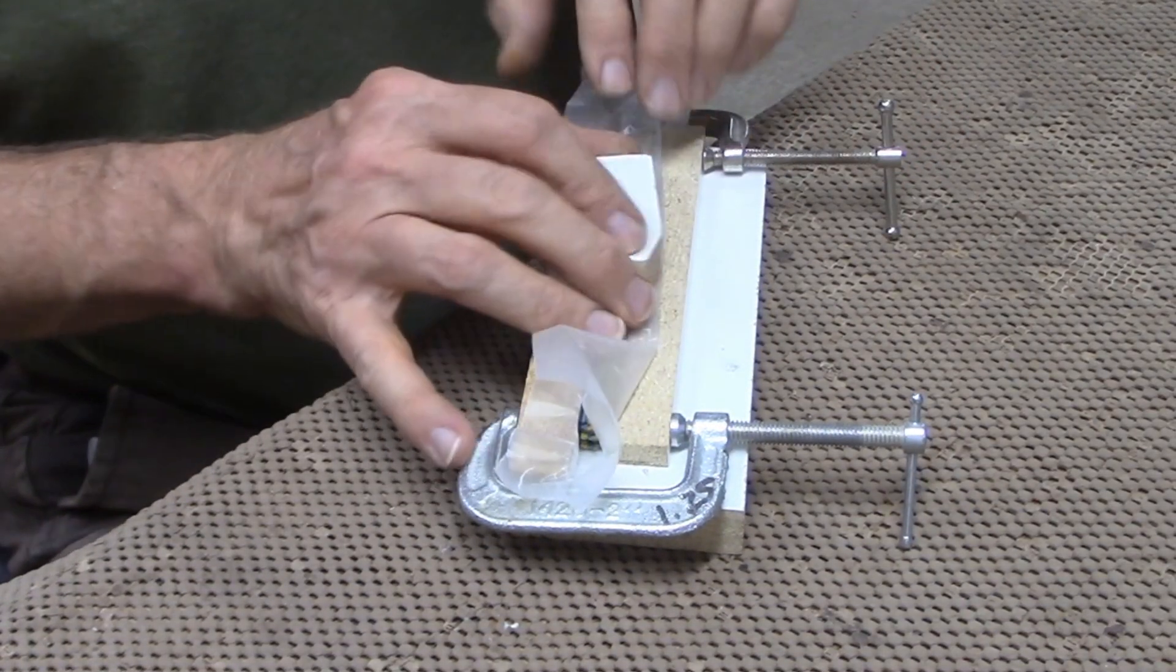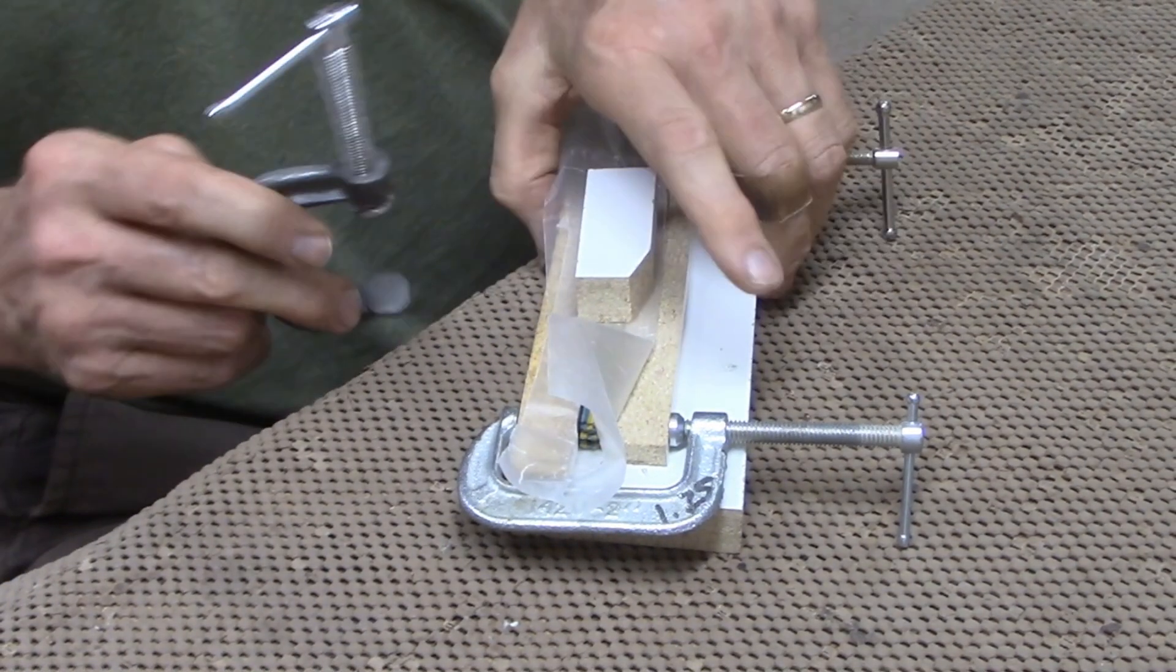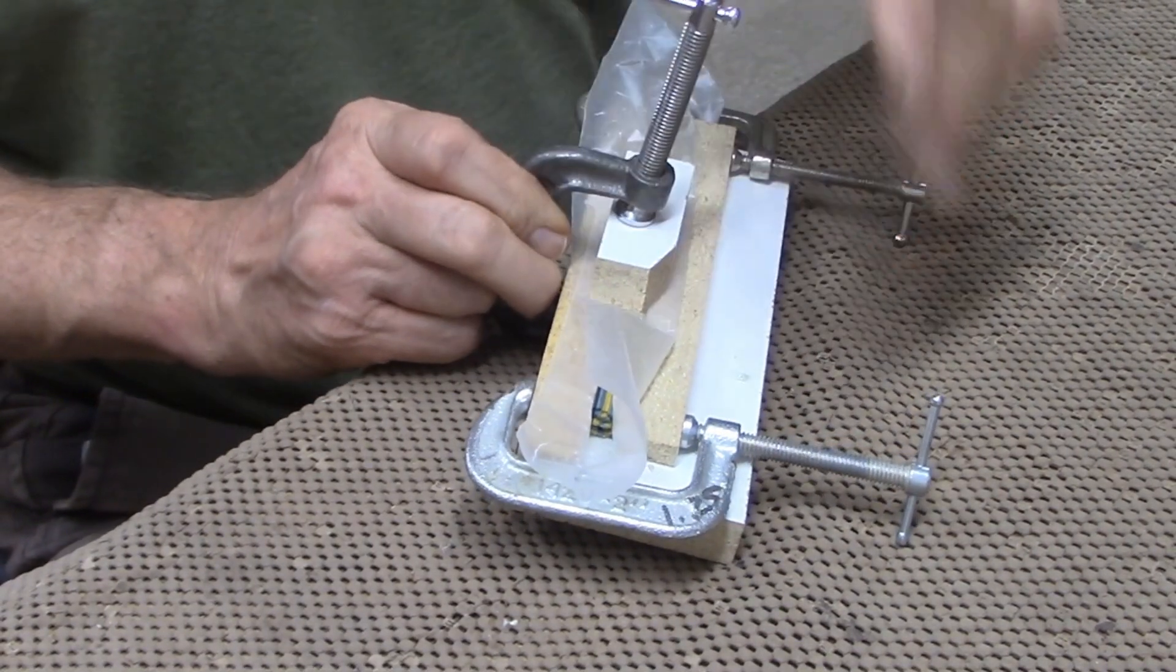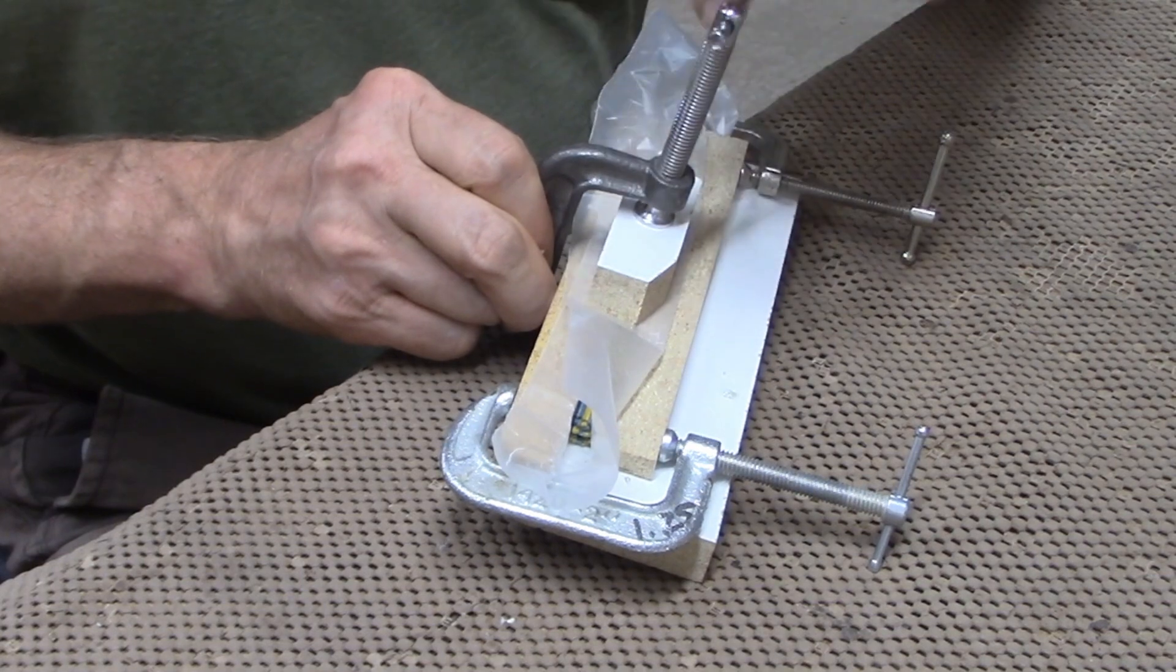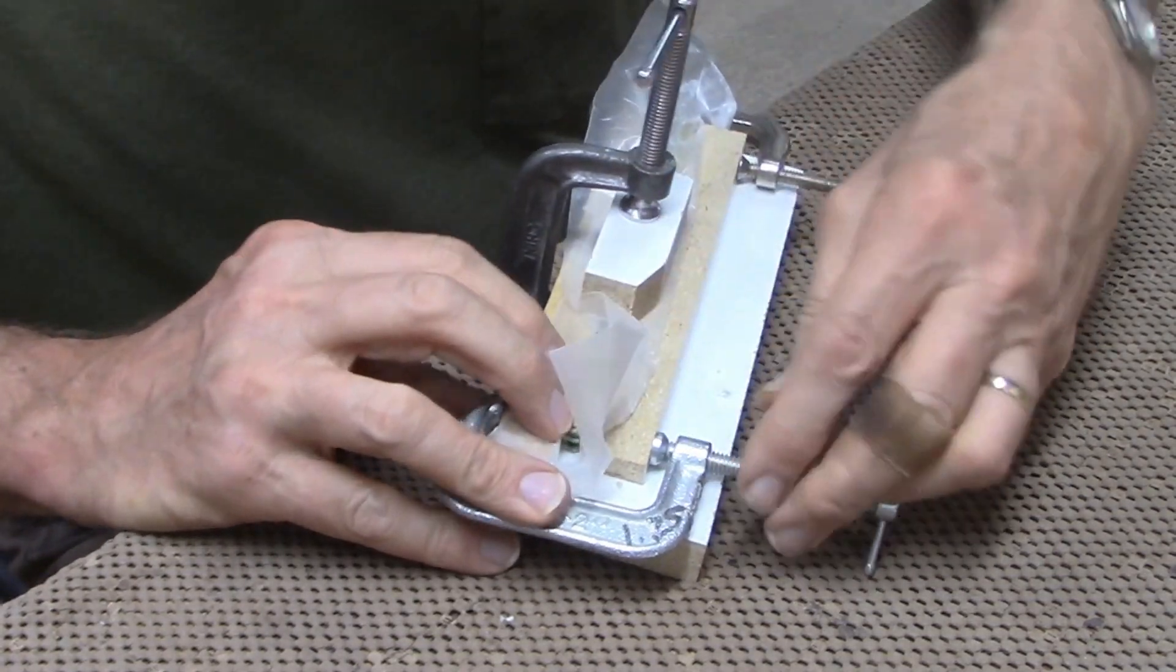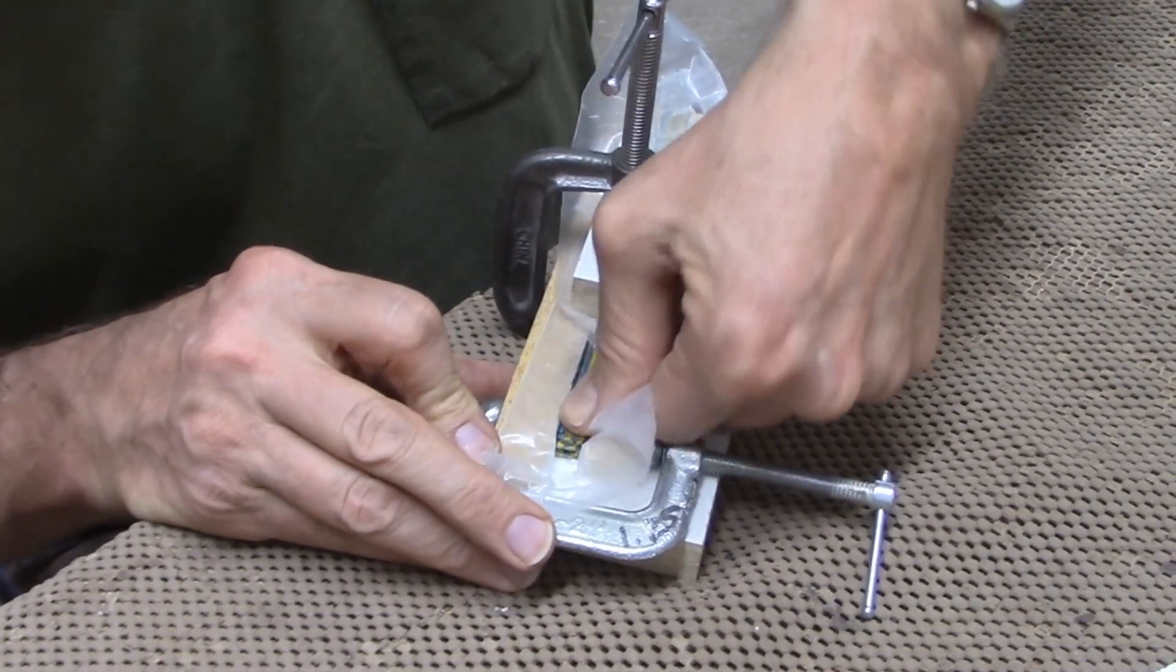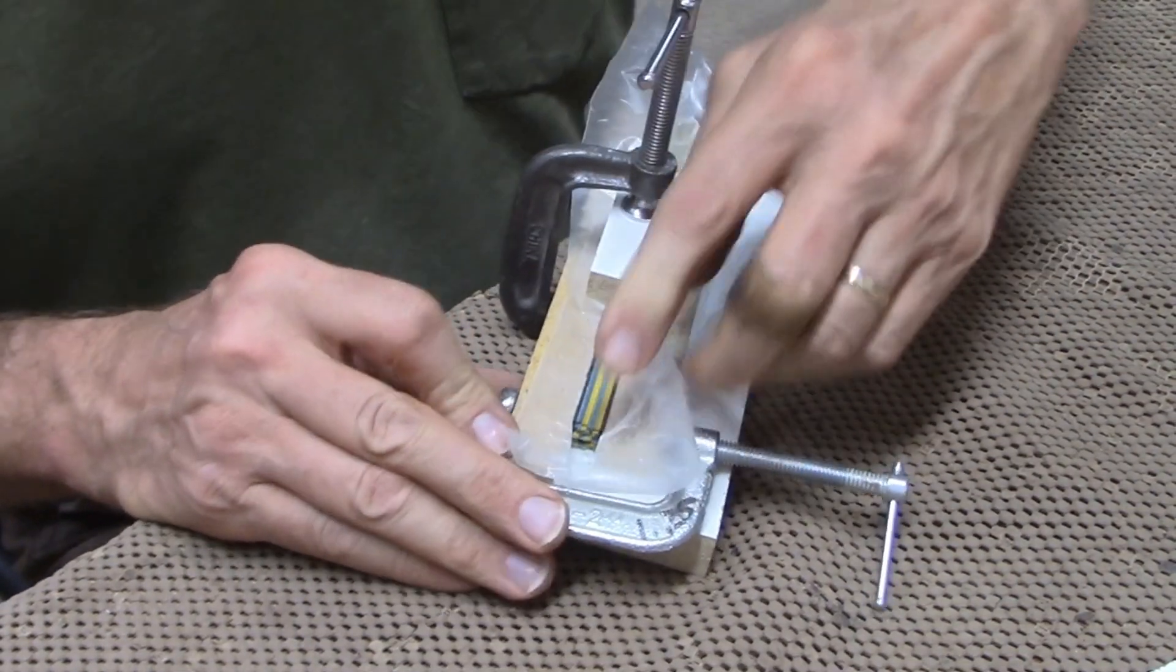Fold the wax paper across, stick a clamp on that. Then I can see that this end is down nicely.